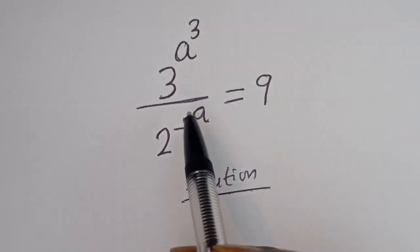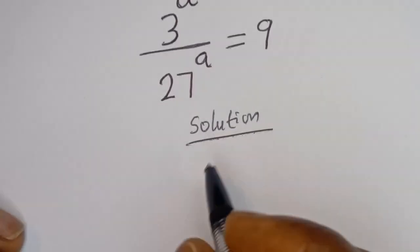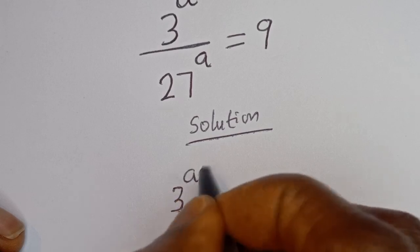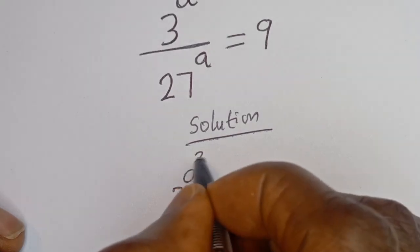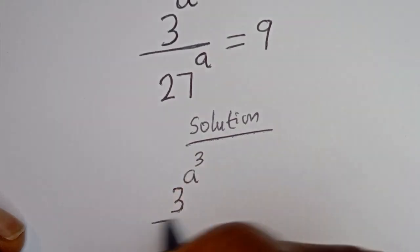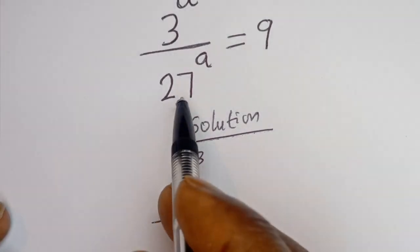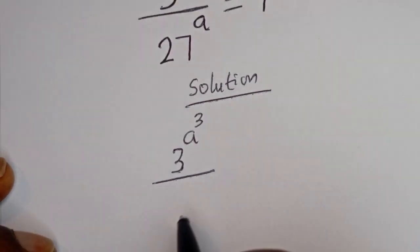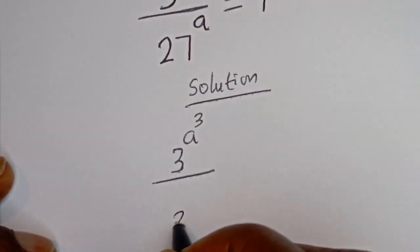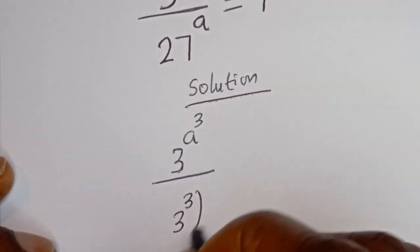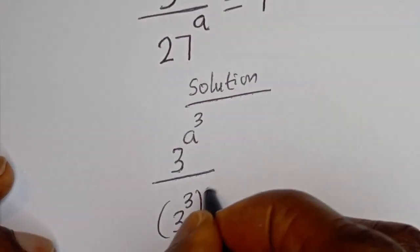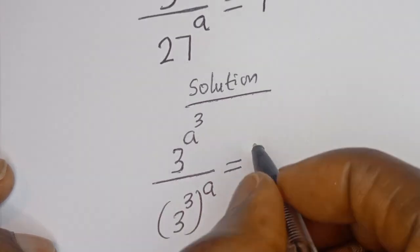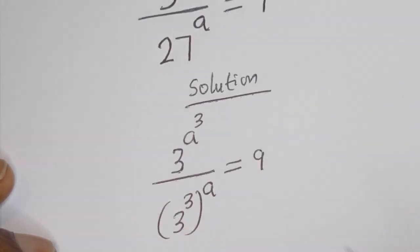From here we have 3 to the power of A to the power of 3, divided by 27 to the power of A, can be written as 3 to the power of 3 to the power of A, is equal to 9.